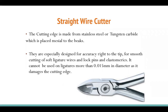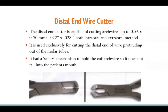The straight wire cutter's cutting edge is made of stainless steel or tungsten carbide. The tungsten carbide tip is amazing but requires care — don't drop the plier and don't use it on hard wire. It is designed for smooth cutting of soft ligature wire, lock pins, and elastomerics. The distal end wire cutter is used intraorally or extraorally exclusively for cutting the distal end of arch wire protruding from molar tubes. It has a safety mechanism to hold the cut arch wire so it doesn't fall into the patient's mouth.